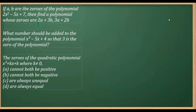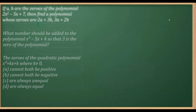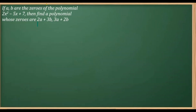In this video I'm going to do three questions from the chapter polynomials, including an MCQ. In the first question, if a and b are the zeros of this polynomial, find the polynomial whose zeros are the given expressions.